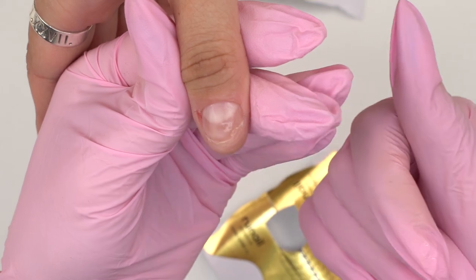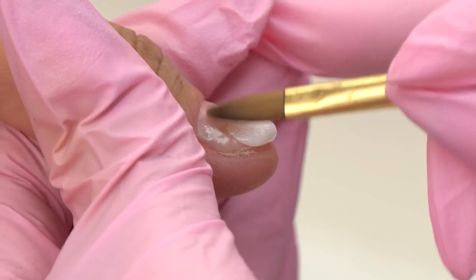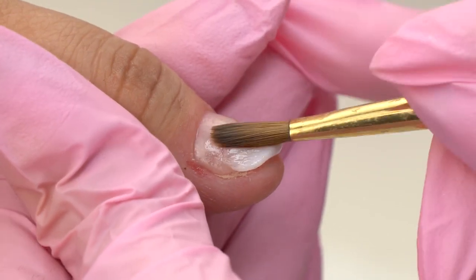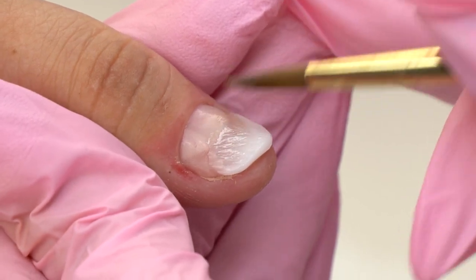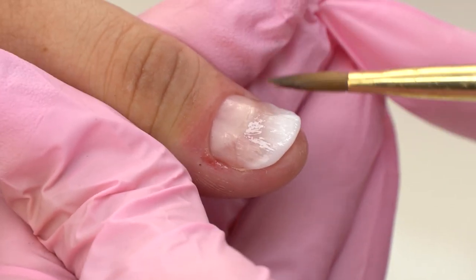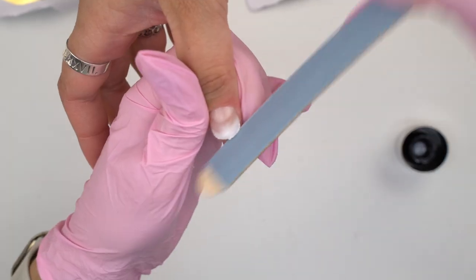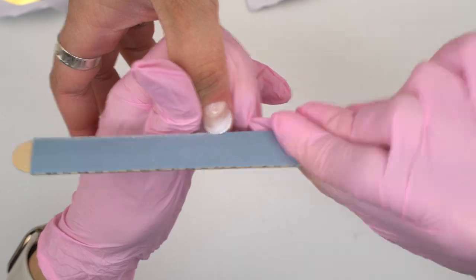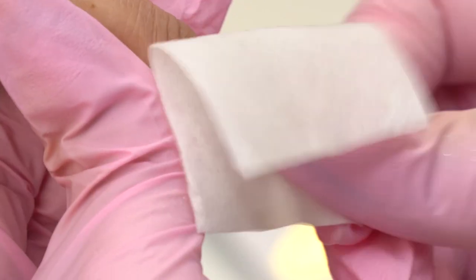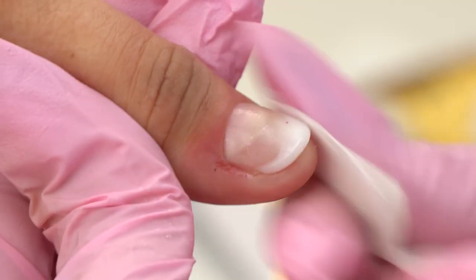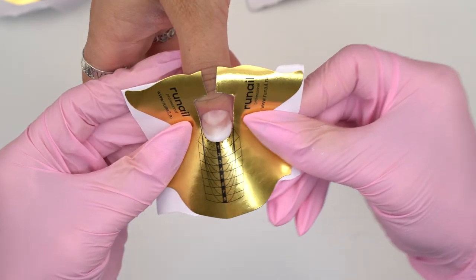But here is a life hack. We can extend the free edge first and then set up the form. I do a base coat layer, then add a drop of Acrygel and pull it down, forming the free edge. Cure it in the lamp, then file it. And here's a faux free edge that we can set up the form on.